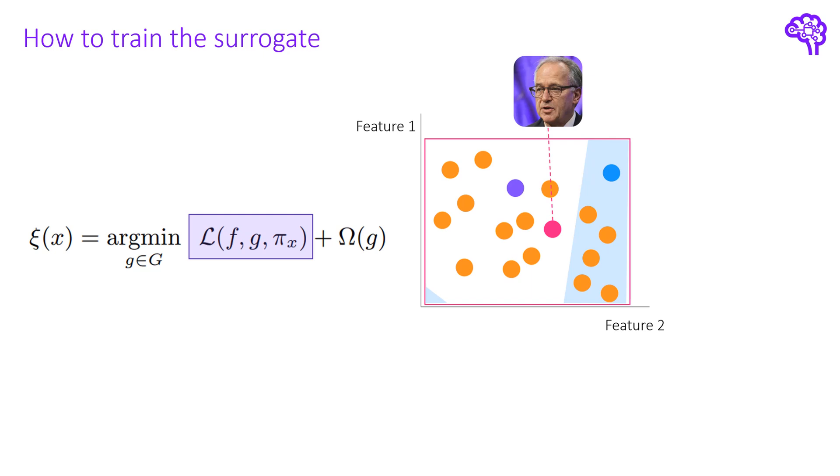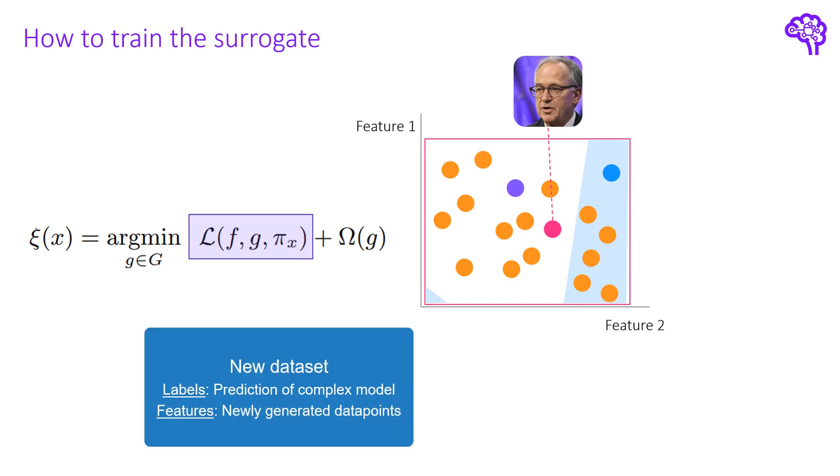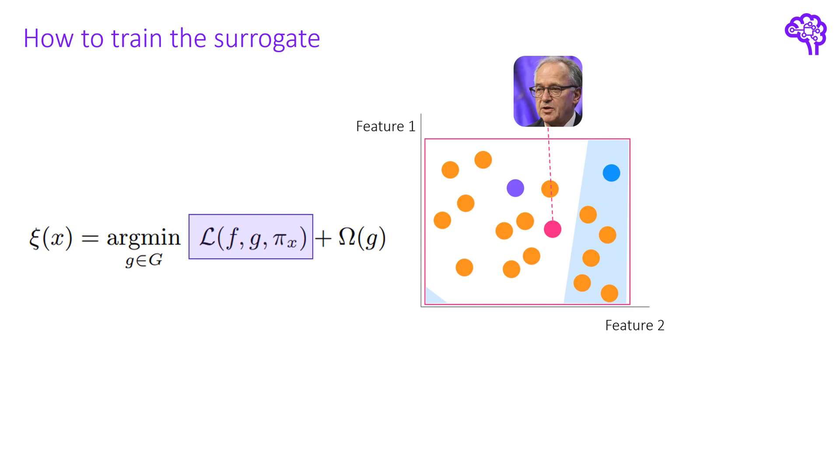Then we get the prediction for these data points using our complex model F. So here all the points in the blue area would be predicted as no stroke and the ones on the other side as stroke. What we end up with is a new dataset we can use to fit a classifier. We have the labels, which come from the predictions of the complex model F, and we have all the feature values, which are simply the sampled new data points.